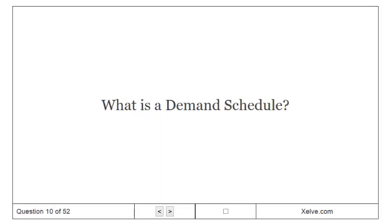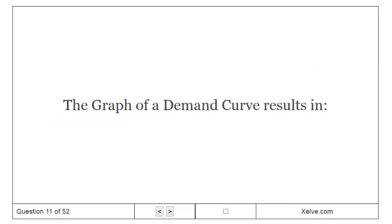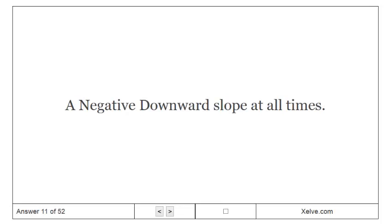What is a demand schedule? A table that shows the relationship between the price of a good and the quantity demanded — the higher the price, the lower the demand and therefore less product is sold. The graph of a demand curve results in a negative downward slope at all times.